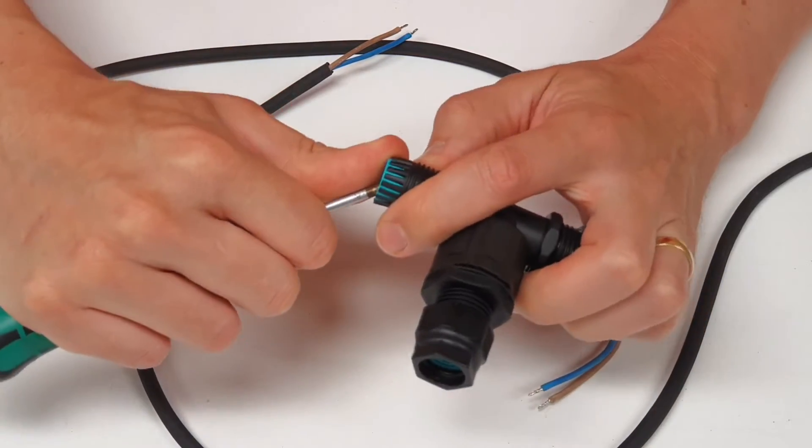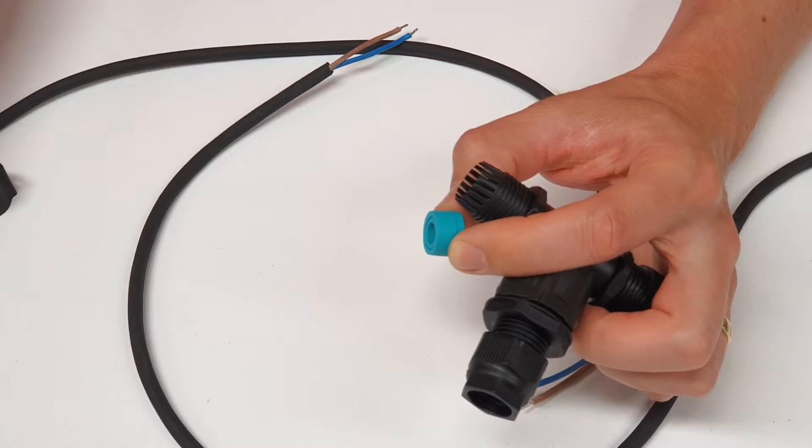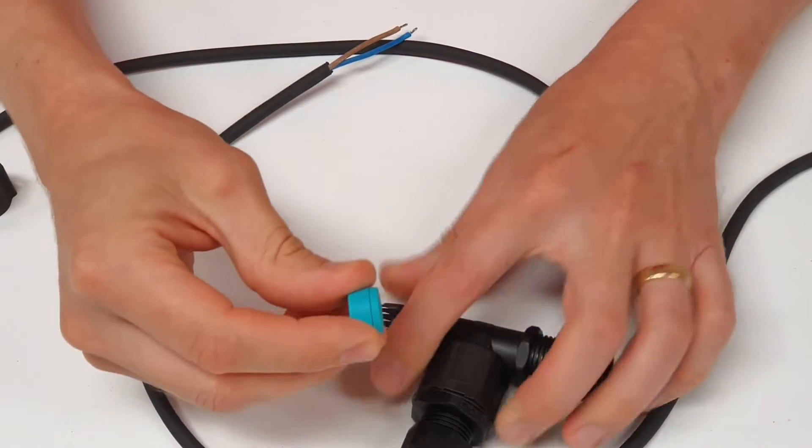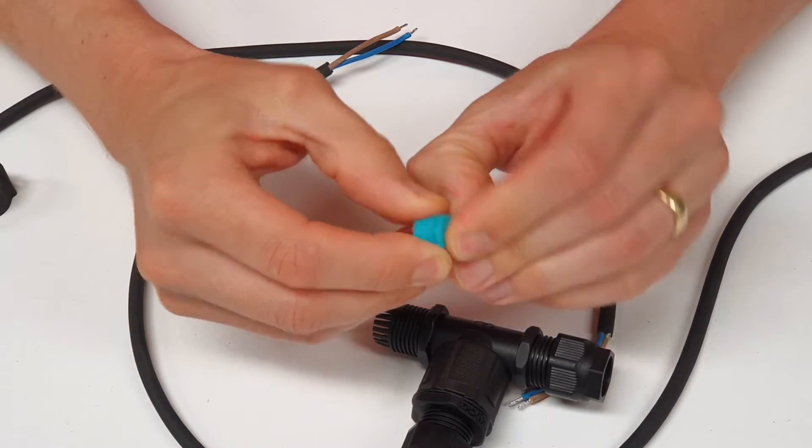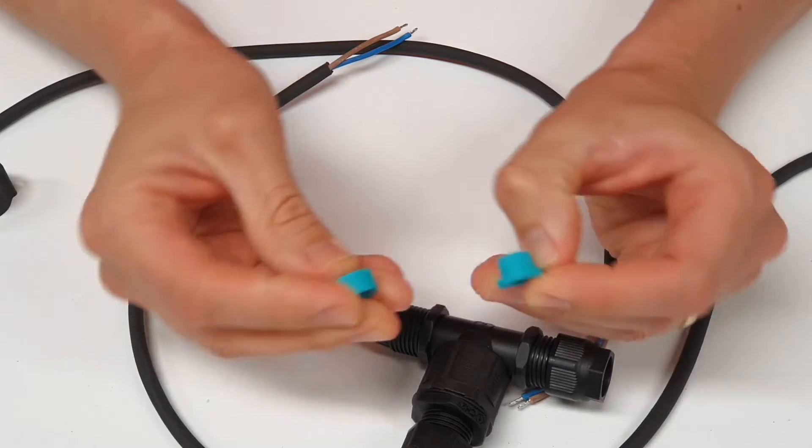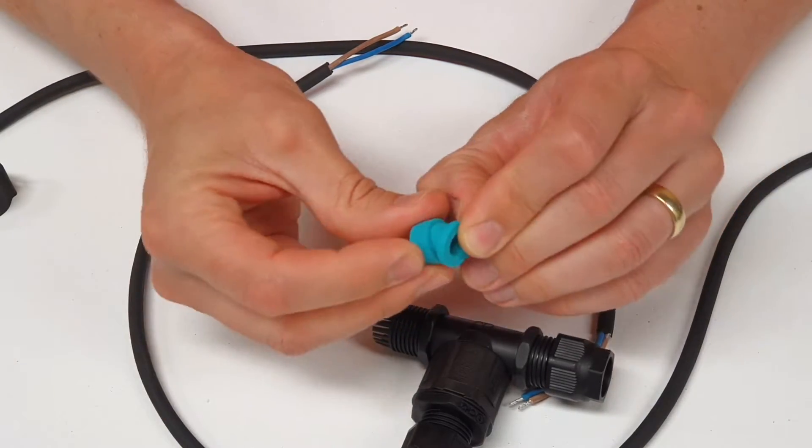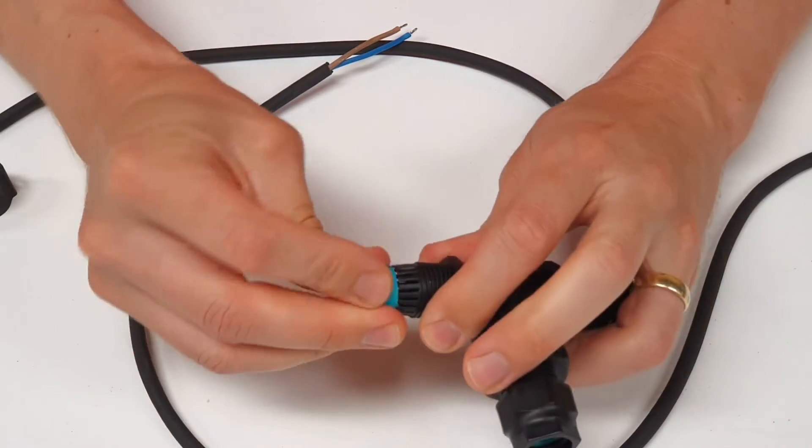So once the cable diameter goes over nine millimeters you simply whip out the insert from inside here and just remove this inner core which allows you to install up to a 13 mil diameter cable which is just great.